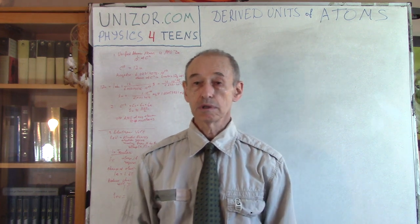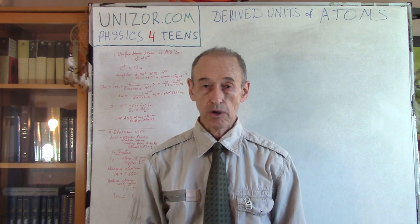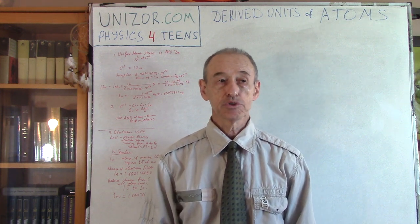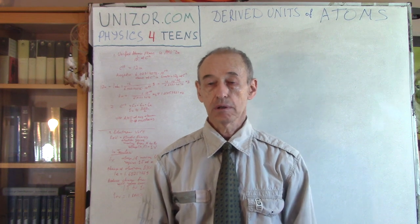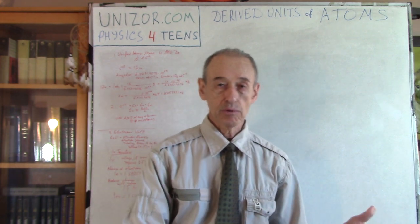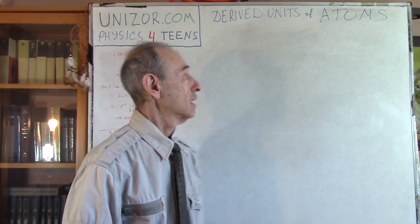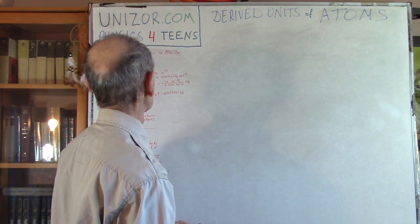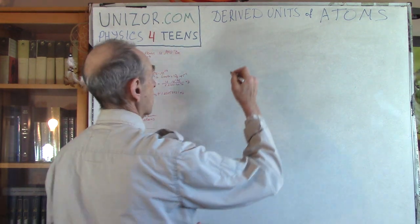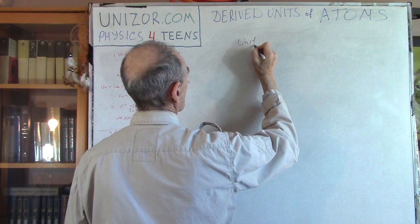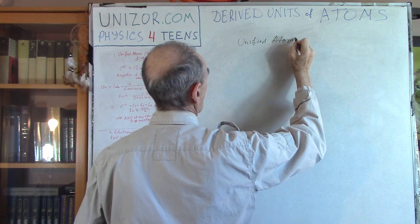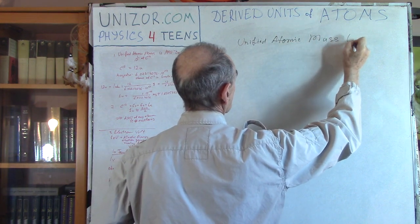Speaking about units used in physics of atoms, I will talk only about two units which are generally used. Everything else is more or less the same as all other parts of physics. The first unit I'm talking about is called unified atomic mass unit.